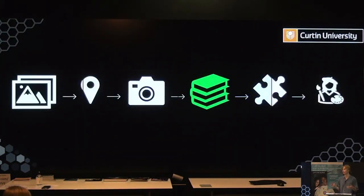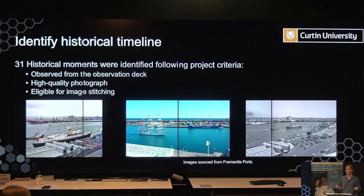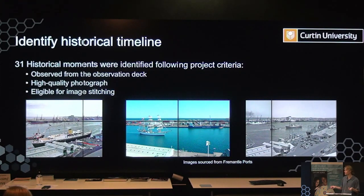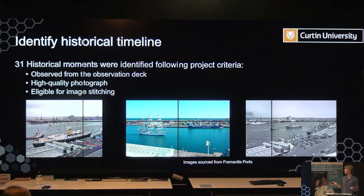The next stage is researching those historical moments. With Alan Pearce we were able to identify 31 historical moments from the original 500 images, following certain project criteria to ensure suitability. Images need to be observed from the observation deck, be of high quality and eligible to be reproduced on a large scale such as a cylinder display, and be eligible for image stitching. Examples include the Queen visiting during her jubilee tour in 1977, a Mexican tall ship in 2006, and a busy working port featuring the ship Kabali in 1966.